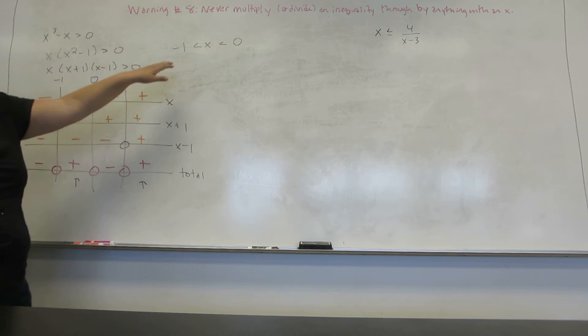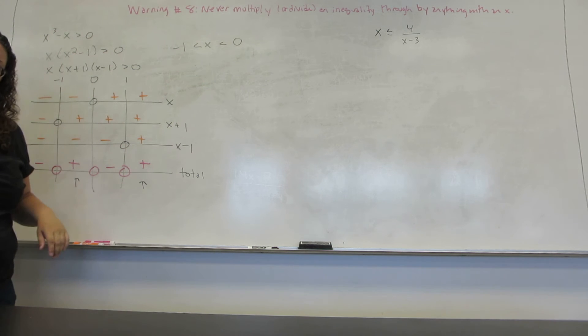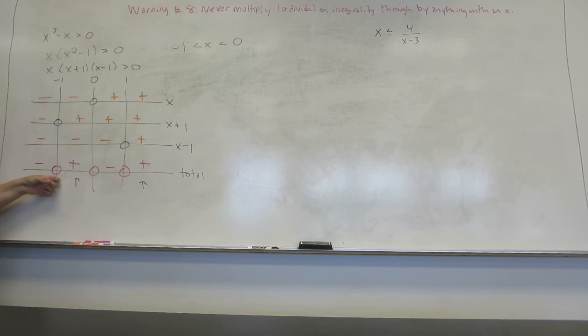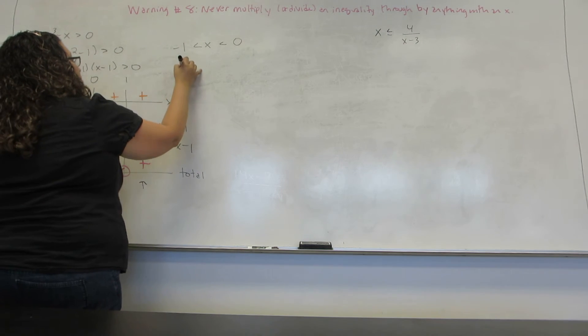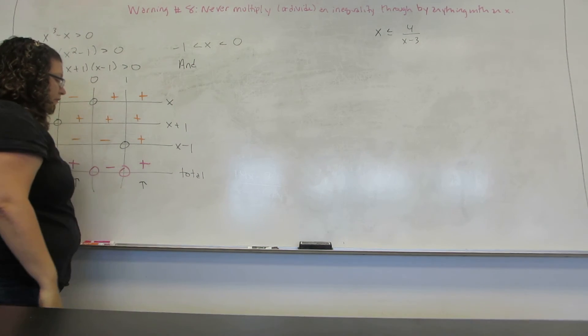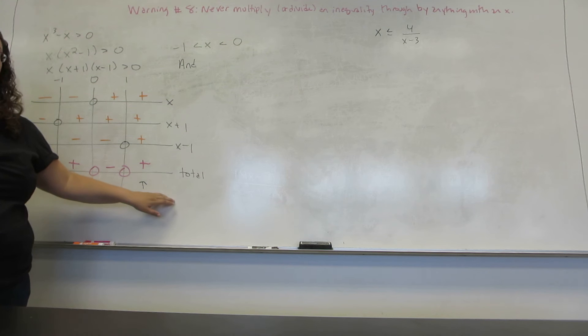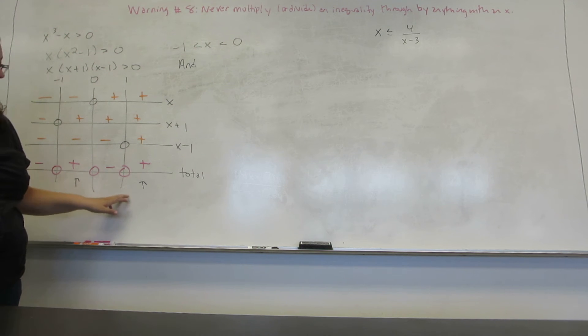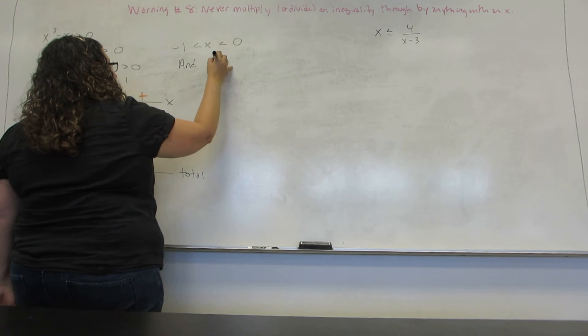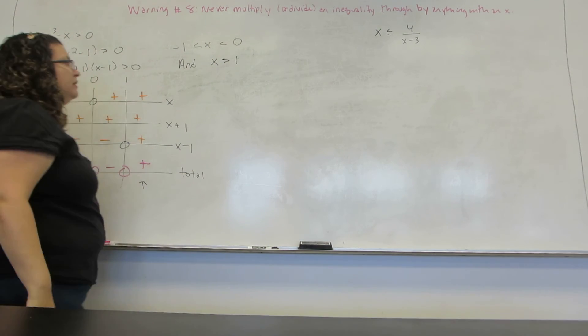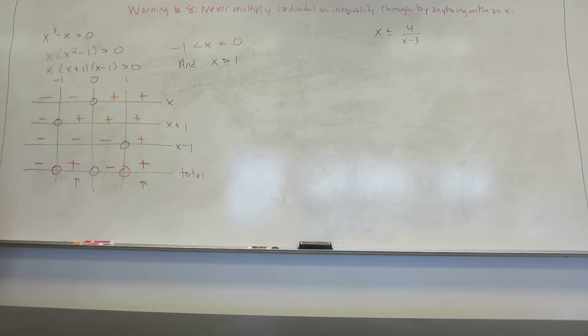By reading these left to right, they're always going to be less thans in between them. Whether or not they're less than or equal to is whether or not I actually can include the zero. My second region of solutions is this last box, which is from one on forever, or in other words everything bigger than one. This gives me my final answer for this inequality.